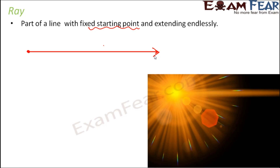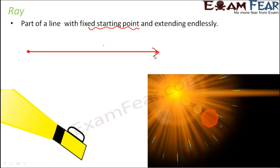An example of a ray would be the sun rays — light coming from the sun. Since the source is fixed, one end is fixed, but the other end reaches infinitely to any place. Similarly, the light coming out of a torch is also an example of a ray, because you have one end fixed — which is the torch — and the other end is reaching out infinitely.